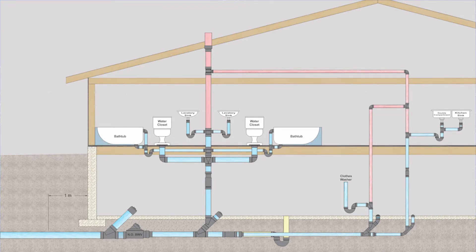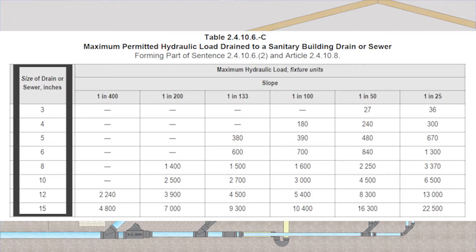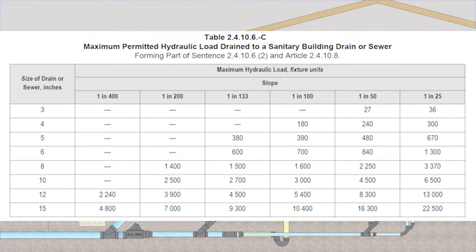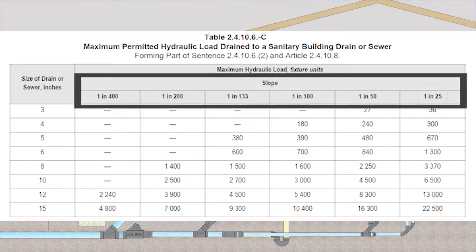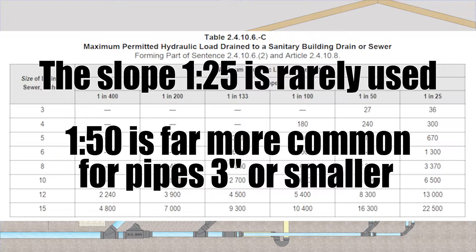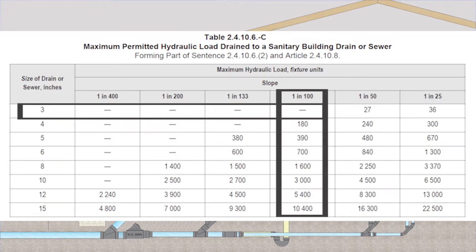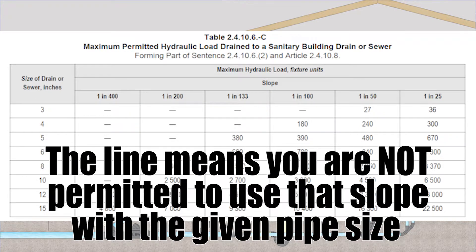The code table to size a building sewer and a building drain is table 24106C. On the left hand side we have the size of drain or sewer in inches. In the middle of the table there are two important things: the first is slope, ranging from 1 in 25 on the right up to 1 in 400 on the left. The slope 1 in 25 is allowed but rarely used because it's steep. 1 in 50 is about quarter inch per foot and that's what we use for pipes three inch and less. At 1 in 100 you'll notice a line across the three inch pipe row — that means a three inch pipe is not allowed to use the grade 1 in 100. The basic rule: if you go down on any slope and there's a line, you're not allowed to use it.